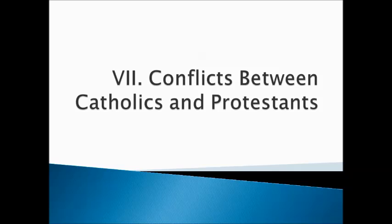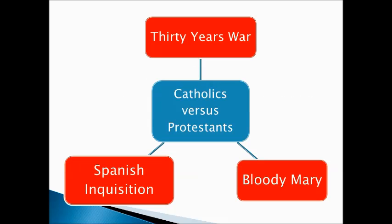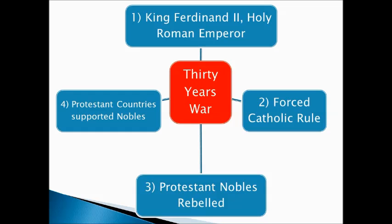Unfortunately, there were many conflicts between Catholics and Protestants during the Reformation and Counter-Reformation. The first is the Thirty Years' War. King Ferdinand II, a Holy Roman Emperor, wanted to force Catholic rule throughout the entire empire. His Protestant nobles rebelled against him, and Protestant countries came to support those nobles, turning it into a war that lasted approximately 30 years. In the end, King Ferdinand and the Catholics didn't really win the war, so the Pope lost some power.